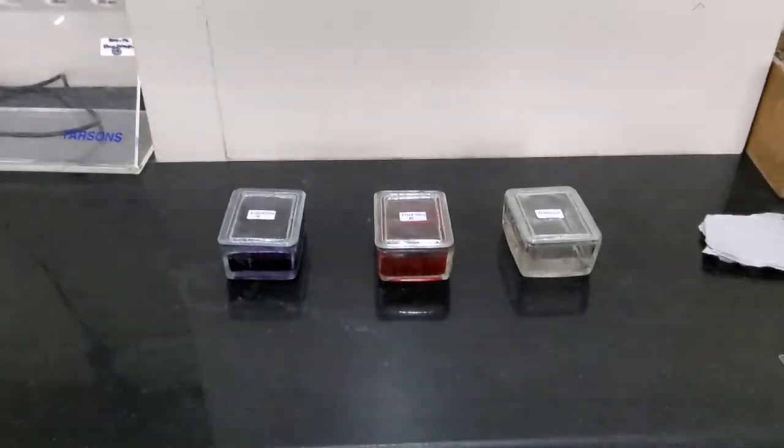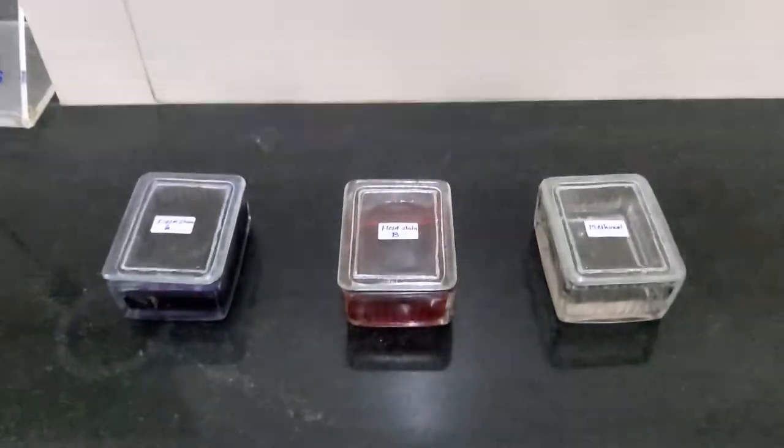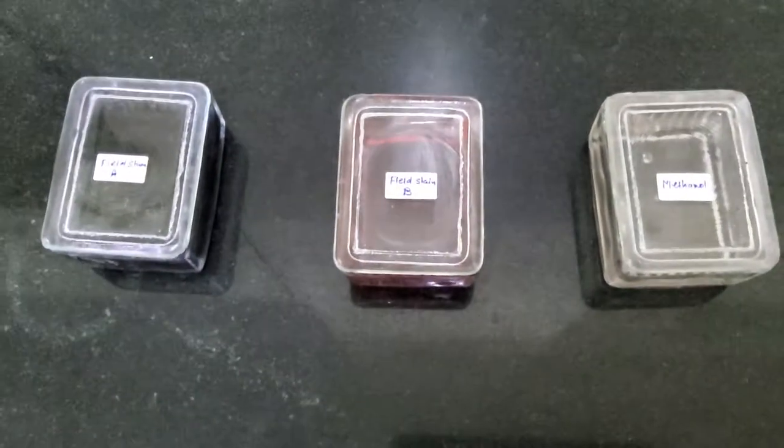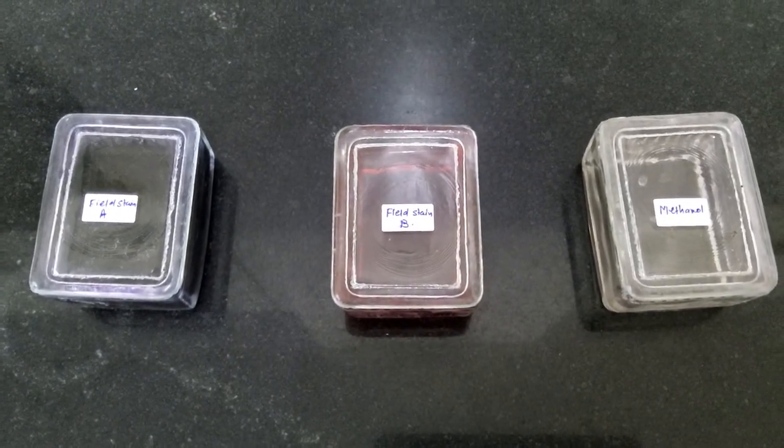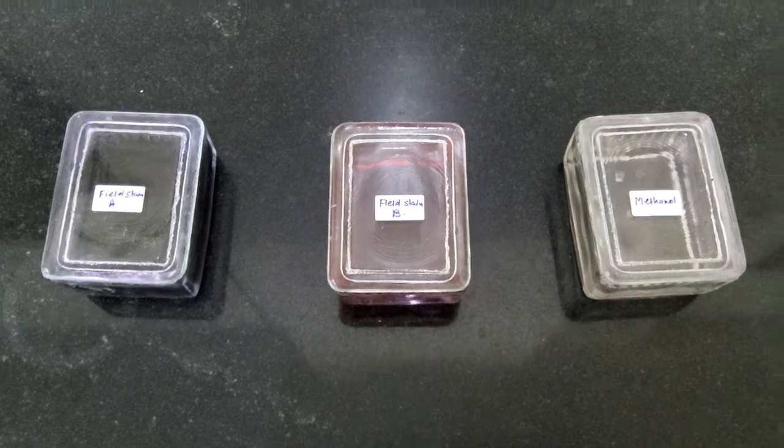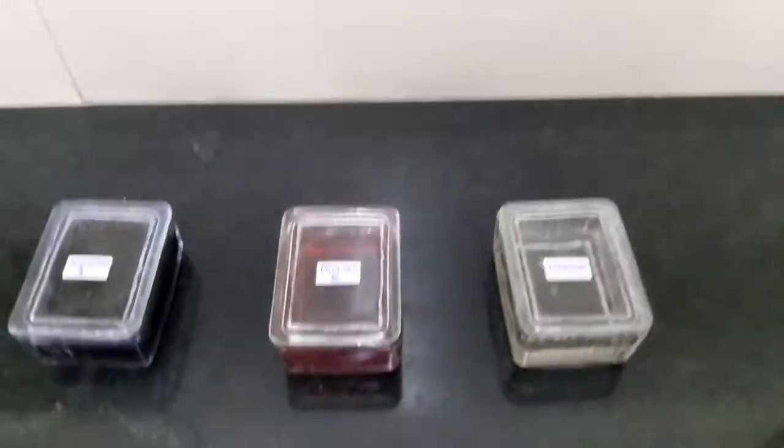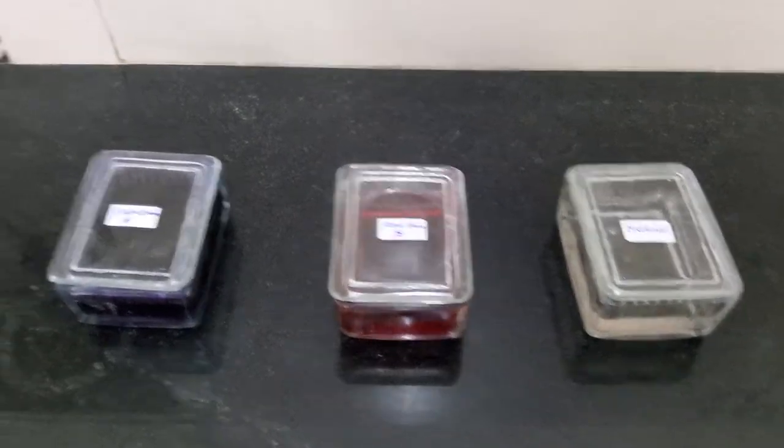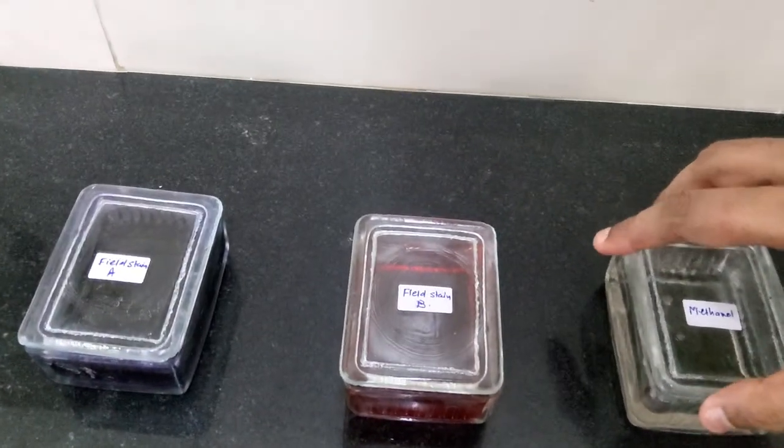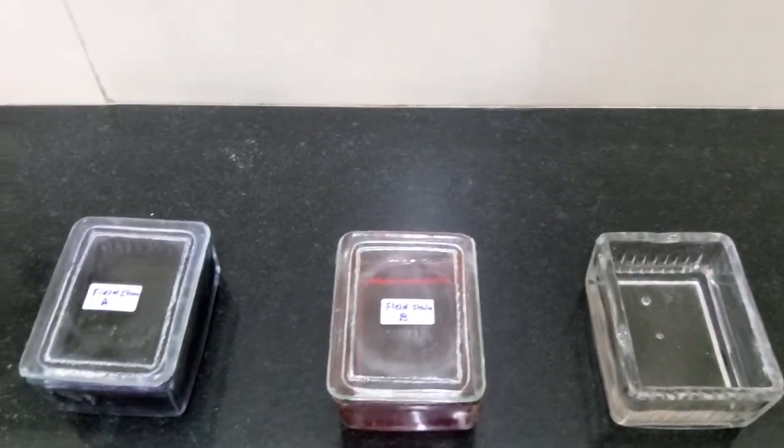All requirements have been kept ready in the staining jars. You can see that it's all kept labeled properly. One staining jar has methanol, another has Field stain B, and then Field stain A. I will start with methanol first because I want to fix my film. I'm going to quickly open the methanol jar.